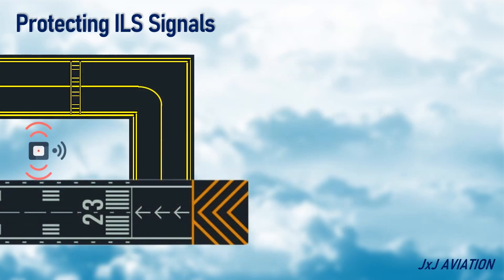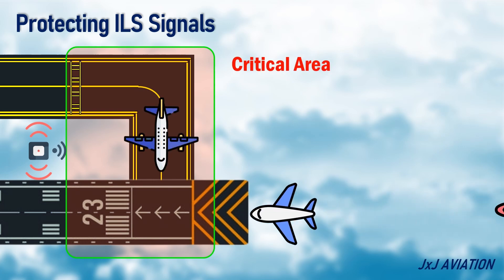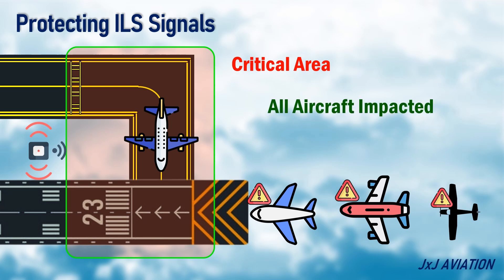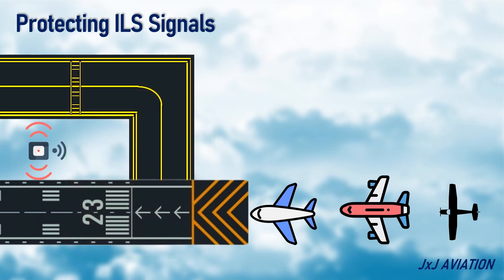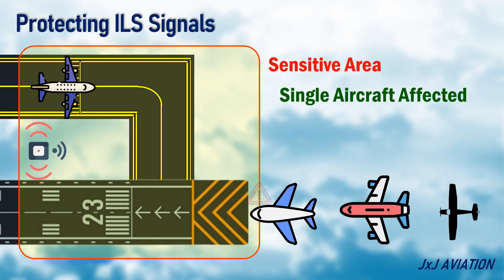Protecting the ILS signals. If there is any disturbance to the ILS signals from the critical area, all the aircraft using the ILS information would be impacted. In case of signal disruption from the sensitive area, it may be temporary and affect only a single aircraft which is at a lower altitude and closer to the runway.